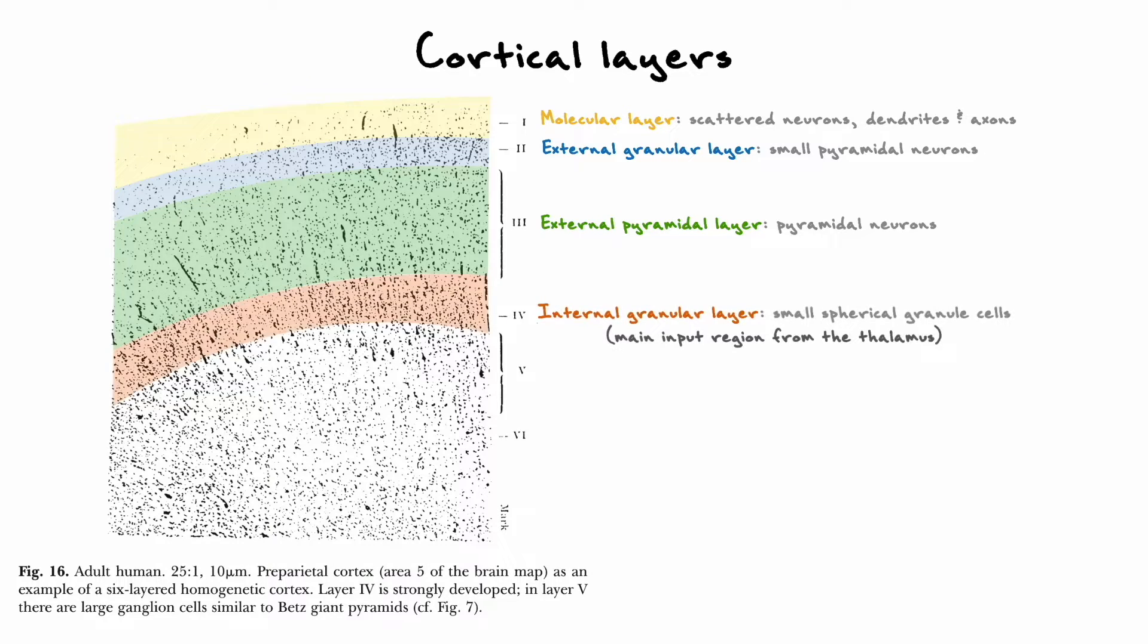Then, we arrive at layer 4, the internal granular layer, which is a very important layer because it is the main recipient of sensory input from the thalamus, and as you will see soon, this layer is most prominent in sensory areas. Layer 4 is mostly made out of small spherical neurons called granule cells.